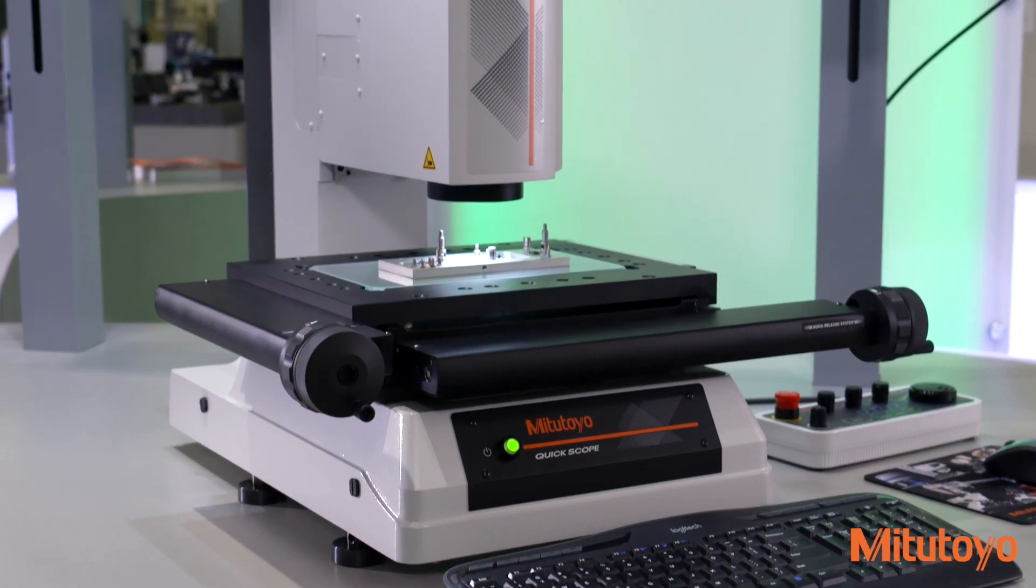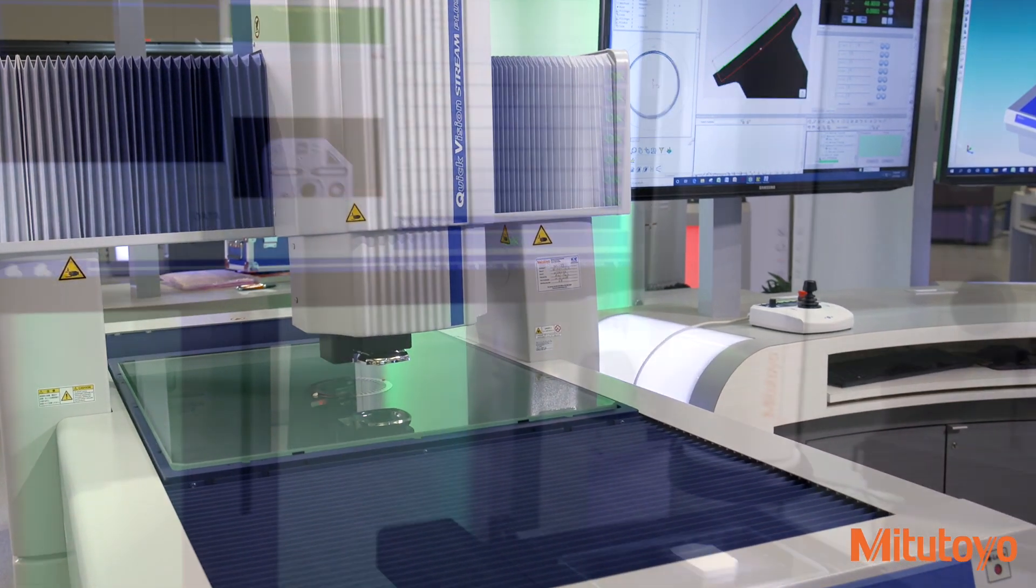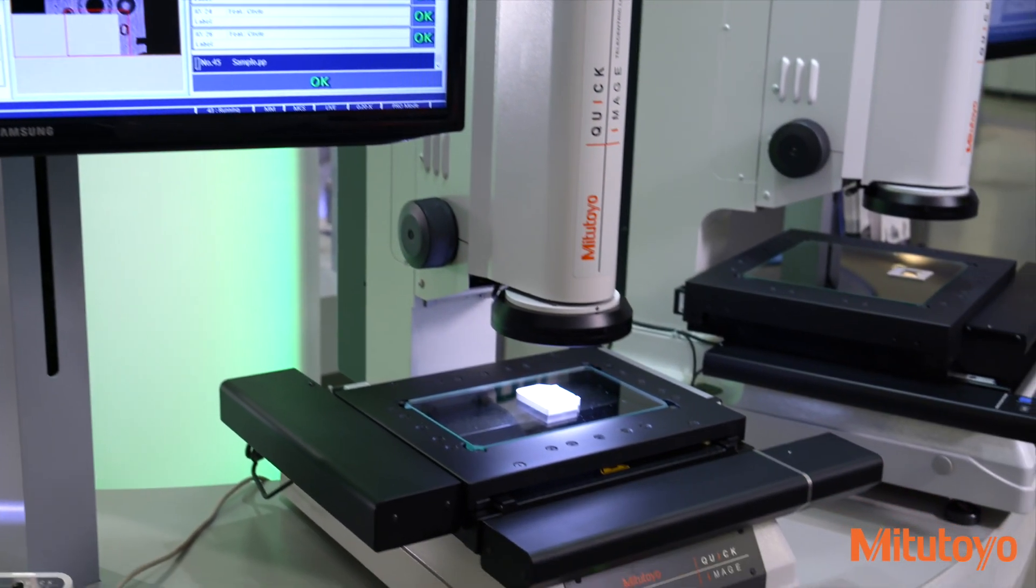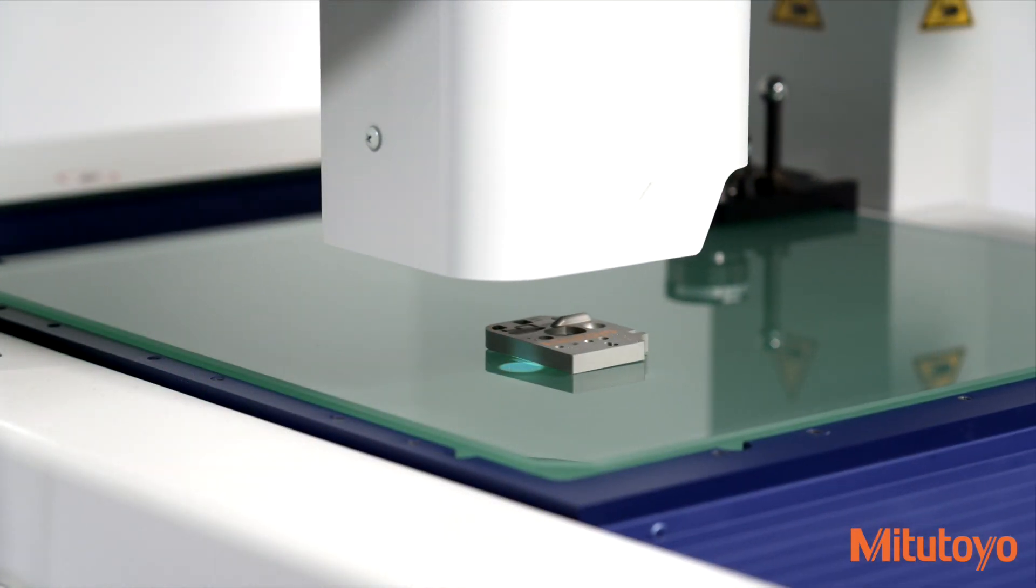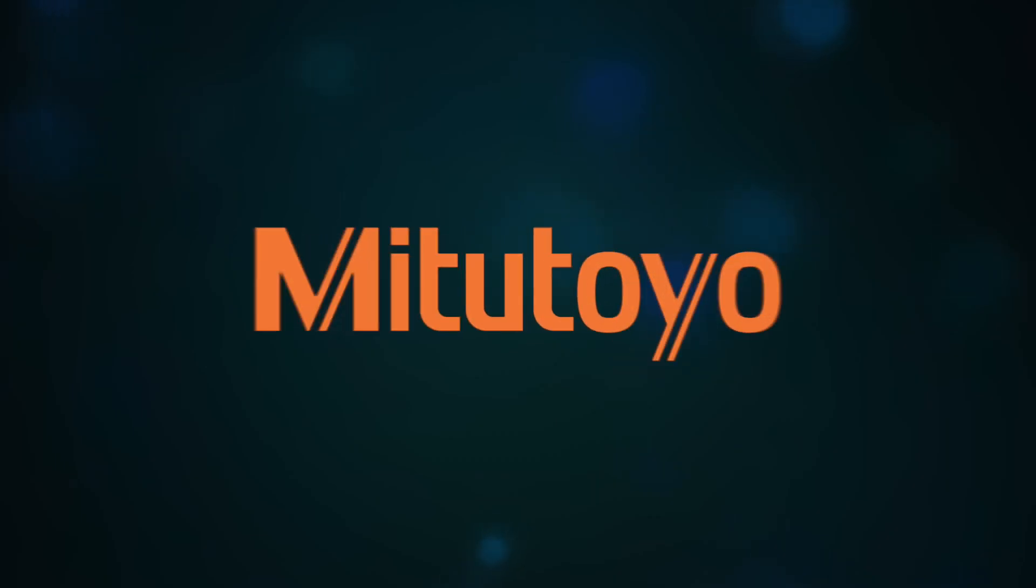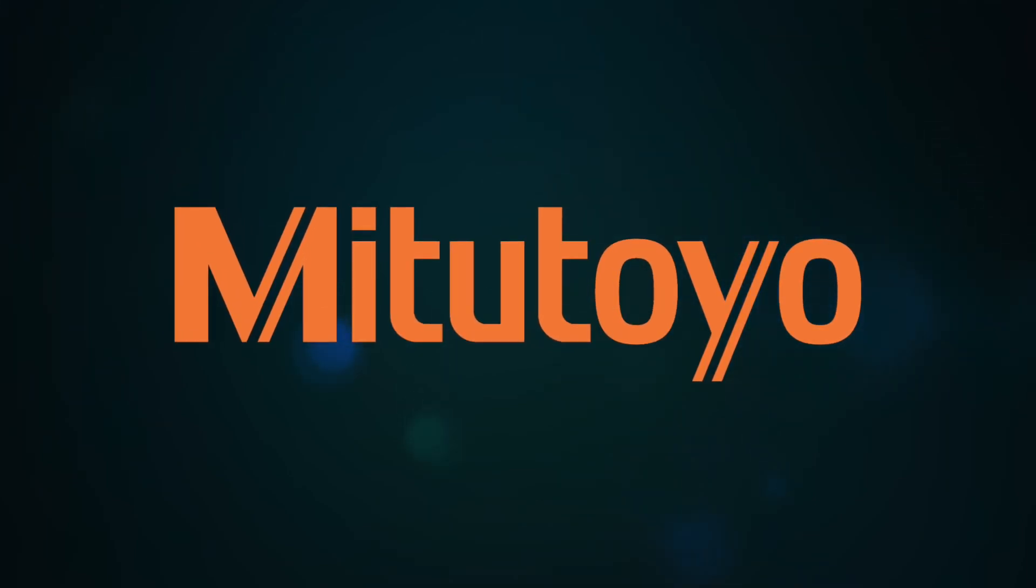Mitsutoyo vision measuring systems offer variety and capability unmatched in the industry, with models suitable for applications on your production line or in your quality control room or laboratory. Leading companies worldwide depend on Mitsutoyo vision inspection technology to inspect their parts and ensure quality in their products.